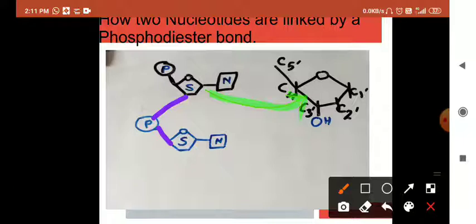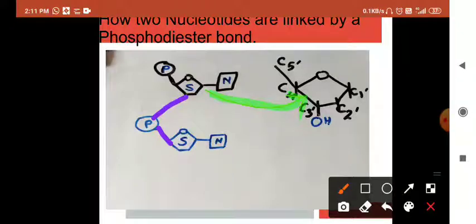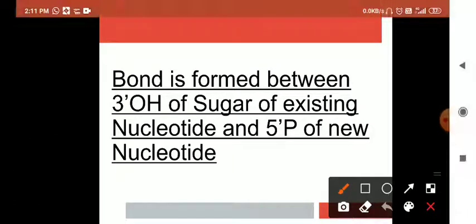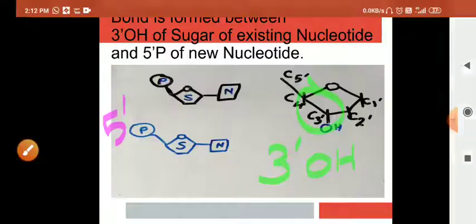Now, this will be phosphodiester bond and this will be connected to the two nucleotides. And similarly, the chain formation. The bond is formed between 3'OH of the sugar of existing nucleotide and 5'P of new nucleotide.